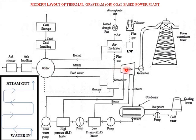This is the modern layout of a thermal, steam, or coal-based power plant. The four main components are: boiler, steam turbine, condenser, and feed pump. The boiler is a mechanical device used for producing high-pressure, high-temperature superheated steam. The turbine receives heat energy from the boiler and converts it into mechanical energy, causing the turbine to rotate. The turbine shaft is coupled with a generator, through which we get electricity.